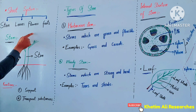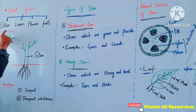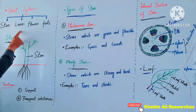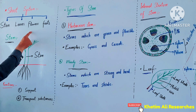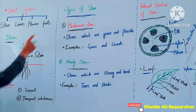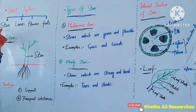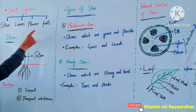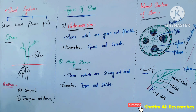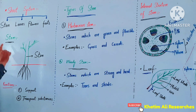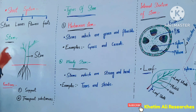The main parts of a plant are the stem, leaves, flowers, and roots. The shoot system — let's look at them one by one. The shoot system includes the stem.